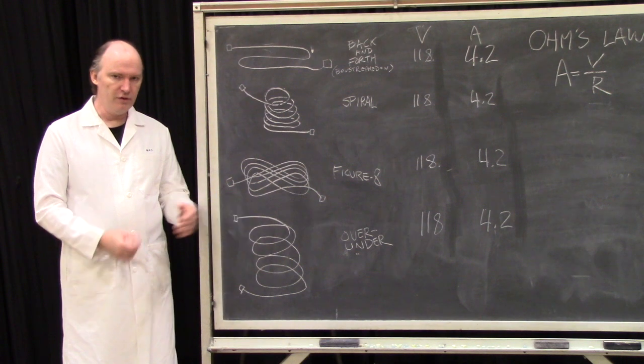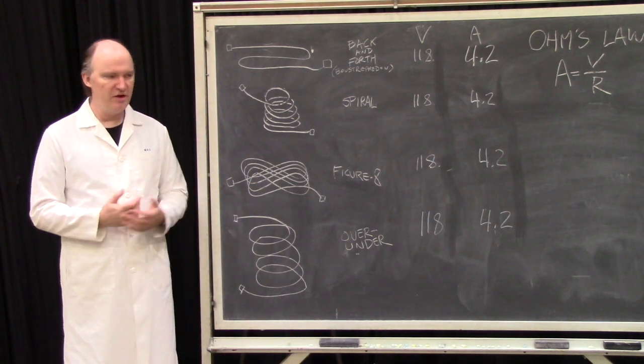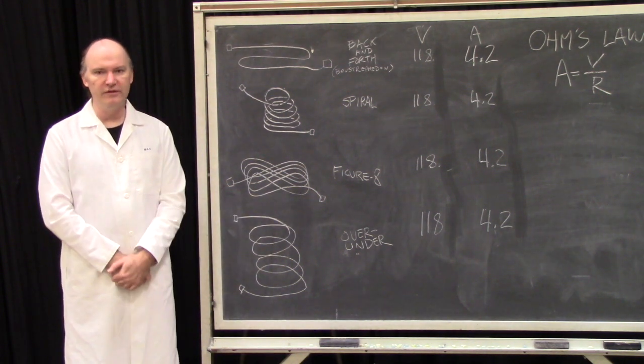So then I coiled it over under style, plugged my lamp in, took my measurements, got 118 volts and 4.2 amps.